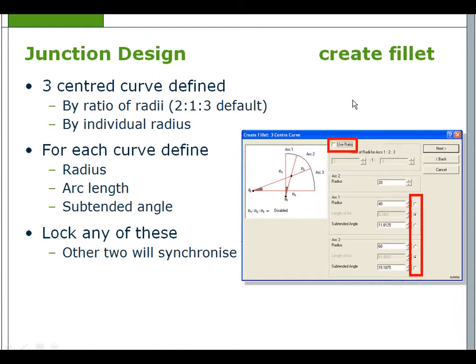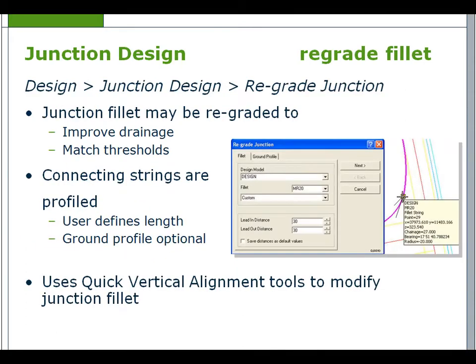Then define a radius for a simple arc, or for the centre curve of a three-centre curve. For a three-centred curve, the default arc ratios are 2-1-3, flowing in the direction of the junction fillet. Amend the ratios to suit local requirements. Be careful when using this function with unequal ratios, as the junction fillet string follows the direction of the side road strings, so be aware that this may reverse the arrangements of the arcs from that which is expected.